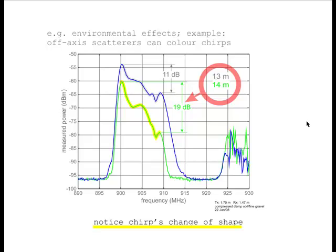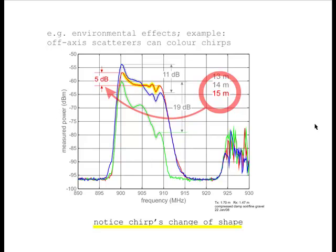When we re-measured the chirp at 15 meters — the only change being range — we now see that the variation from low frequency to high frequency has become 5 dB. So over just a very small distance in range, we see a large change in effective radiated power coming from the chirp.